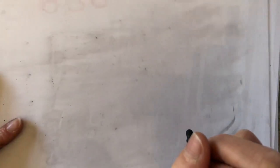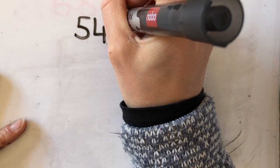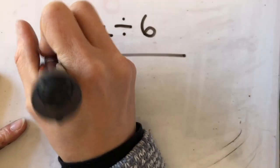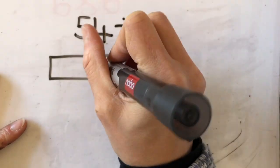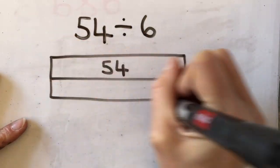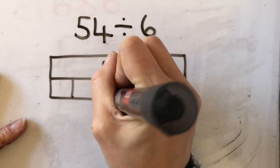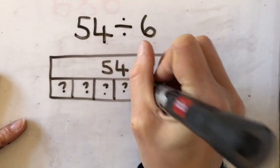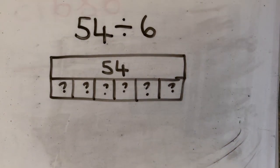Now if I know that 54 is my total and I'm sharing into six groups—my total is 54, I'm sharing into six groups. So I've got six groups but I have no idea how many are in each group. My representation would be that.